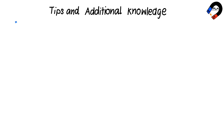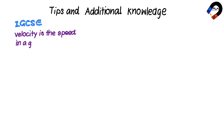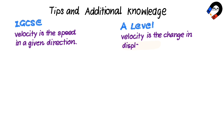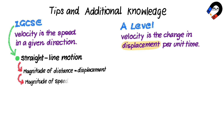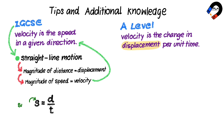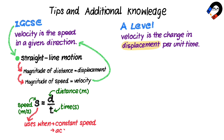Tips and additional knowledge. In IGCSE CIE physics, velocity is defined as the speed in a given direction. However, the more precise definition of velocity is the change in displacement per unit time, which students will study in A-level physics. Because in the IGCSE syllabus, students study straight line motion only. In straight line motion, the magnitude of distance and displacement are the same, therefore the magnitude of speed and velocity are the same, and we can define velocity as the speed in a given direction. The equation S equals D over T, where S is constant speed in meters per second, D is distance moved in meters, and T is time taken in seconds. This equation uses only constant speed and acceleration is zero.